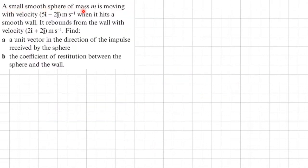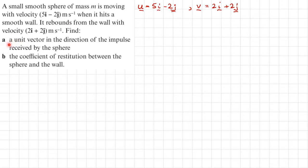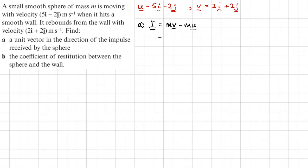First example: a small smooth sphere of mass m moves with velocity u = 5i − 2j. When it hits a smooth wall it rebounds with velocity v = 2i + 2j. There's no information about the direction of the wall — just the incoming and outgoing velocities. Part a asks us to find a unit vector in the direction of the impulse received by the sphere.